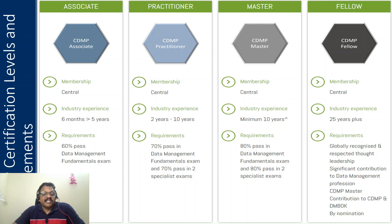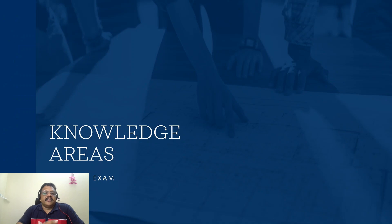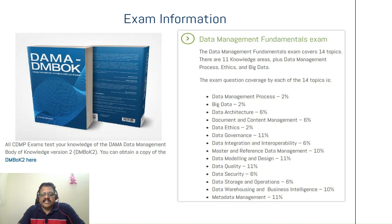We can limit our focus to Associate, Practitioner, or Master, as Fellow is beyond our immediate scope — from the numbers we have seen, there are only three Fellows. We can start with CDMP Associate, which requires a minimum 60% pass mark. For Practitioner, make sure you obtain 70% on the fundamental exam. There are 14 topics in the knowledge areas.